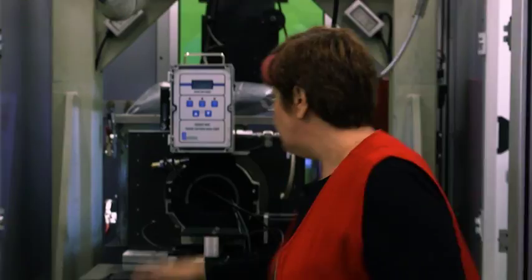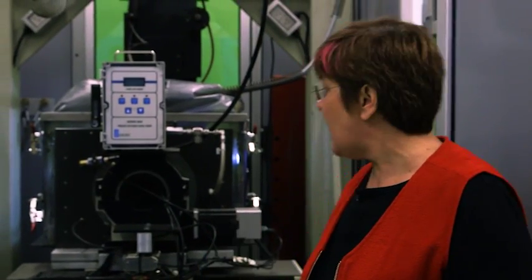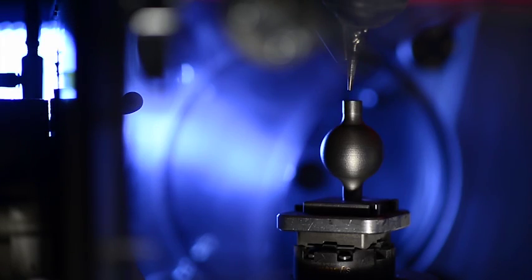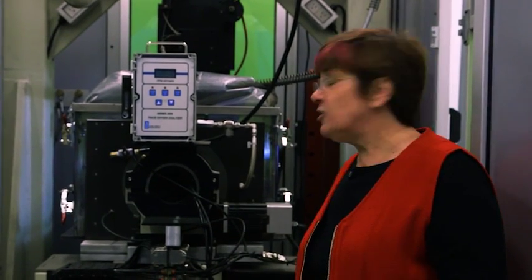Over here we have our laser fiber optic cable that brings the laser into our magic box. We have a motion system with five axes. We have a box here made out of plexiglass where we build or manufacture things in an argon atmosphere to reduce contamination and reduce oxidation.